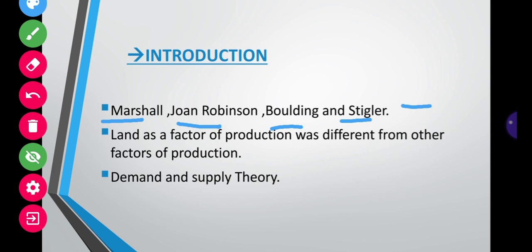Classical economists thought that land as a factor of production was different from other factors of production. We already discussed in the David Ricardo Theory of Rent that he argued rent arises only to land, not to other factors.